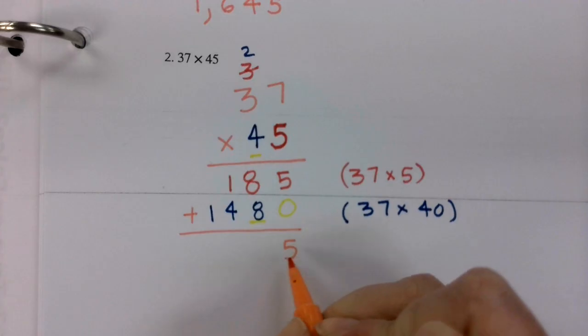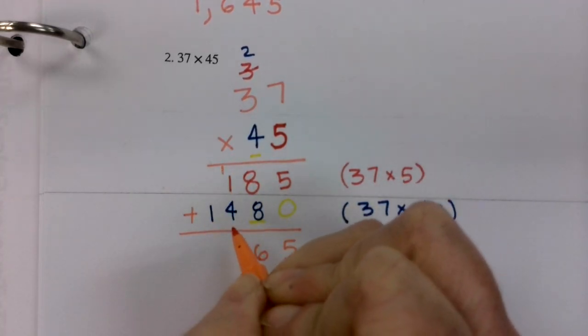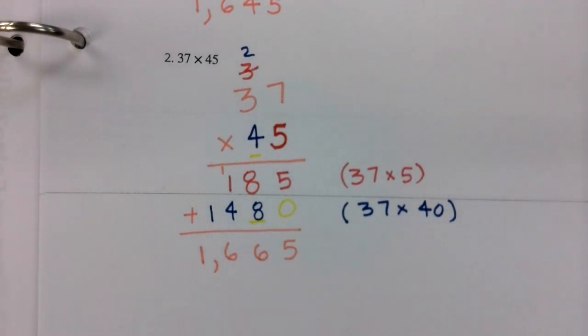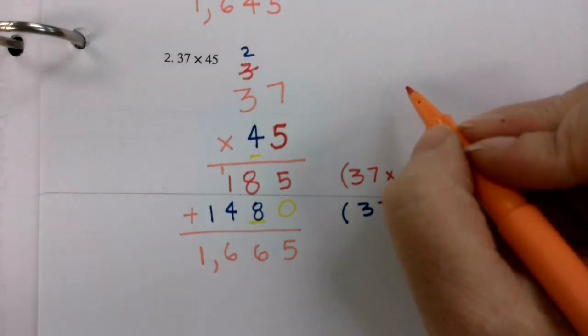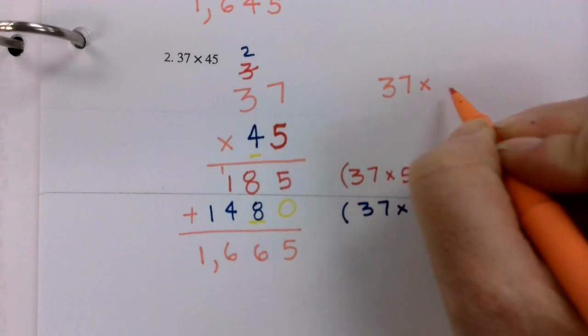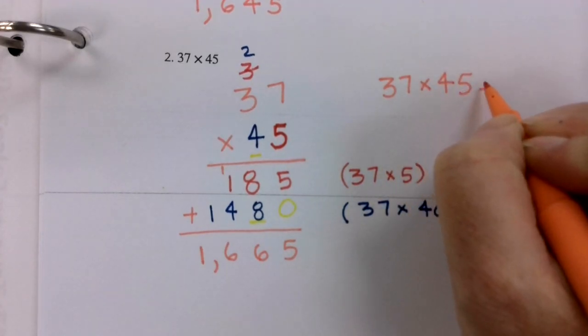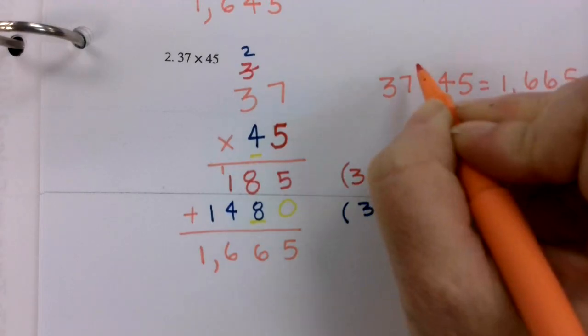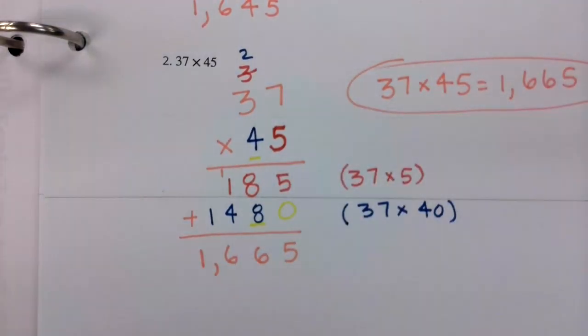Five plus zero is five. Eight plus eight is 16. Here's my six. Carry my one. Four plus one plus one is six. And one plus nothing is one. We're going to put a comma here. We have arrived at our answer. And we remember that this is really what 37 times 45 equals. It equals 1,665. And this is the answer to our cool down number one.